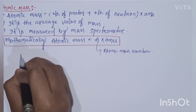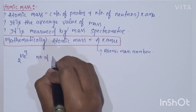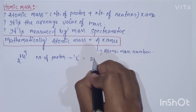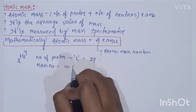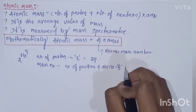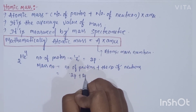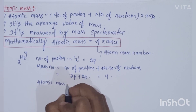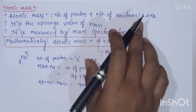Suppose we have the element helium-2,4. The atomic number Z is the number of protons, which is 2. The mass number A is the number of protons plus the number of neutrons — so mass number is 4. The atomic mass is 4 amu.